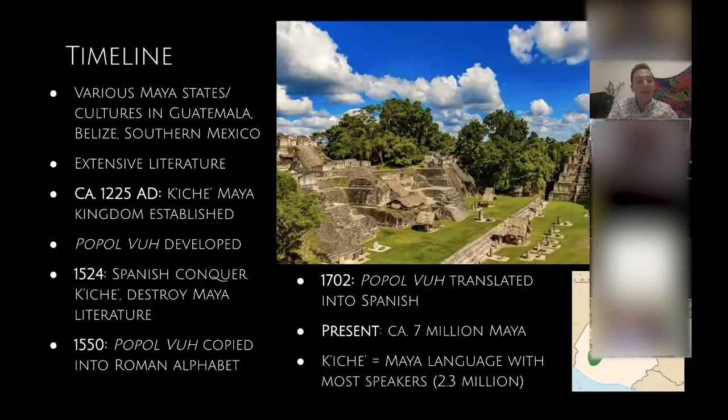What's really cool about it is that it tells you the beginning of the world and all this primordial history, but it ends with the conquest of the Spanish — the Popol Vuh at the very end actually tells you that. So it's really modern history that they're recording up until that point. At present, there are a few million Maya people in Central America, and K'iche is actually the most widely spoken Maya language today — about 2.3 million people still speak it, most of them in Guatemala.